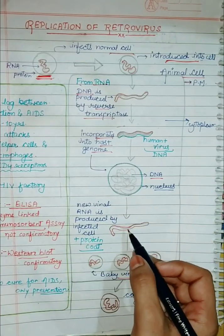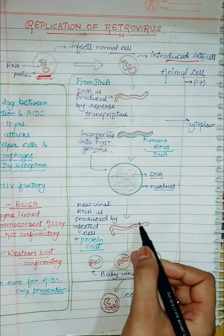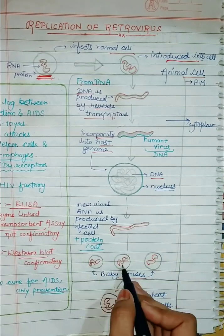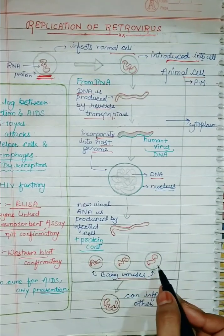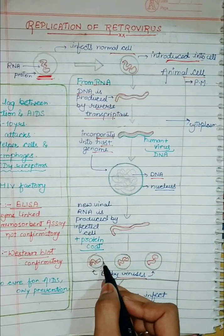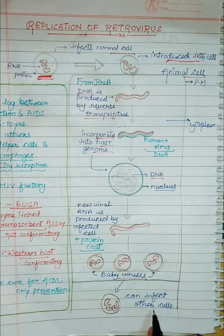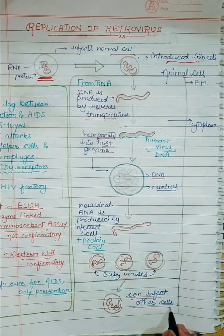Now, new viral RNA will be produced. That means infected cells will be produced. Along with the infected cell, a protein coat will also be produced. And these baby viruses — these new viruses — will get captured in the protein coat, and now they are ready to infect other cells.